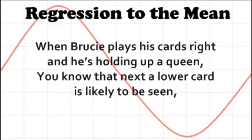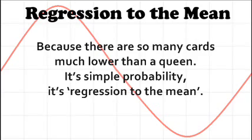When Brucey plays his cards right and is holding up a queen, you know that next to lower card is likely to be seen. Because there are so many cards much lower than a queen, it's simple probability, it's regression to the mean.